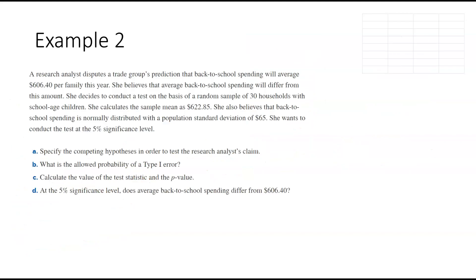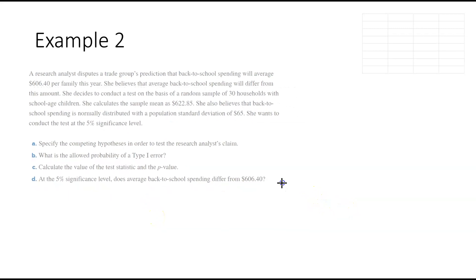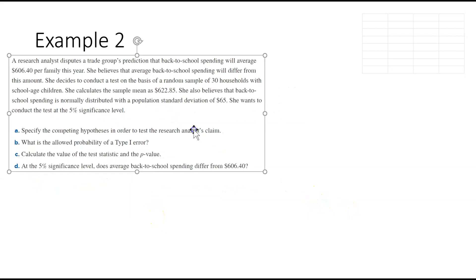Let's look at example 2. A research analyst disputes a trade group's prediction that back-to-school spending will average a certain amount per year. She believes that the average will differ from this amount, and decides to conduct a test on the basis of a random sample of 30 households with school-aged children. She calculates the sample mean and believes the spending is normally distributed.